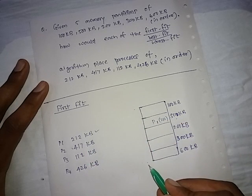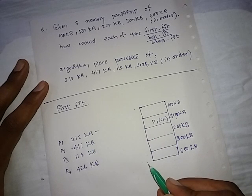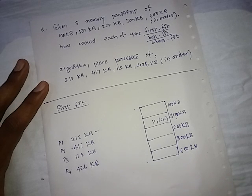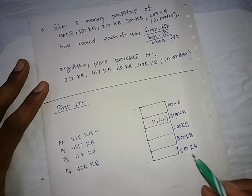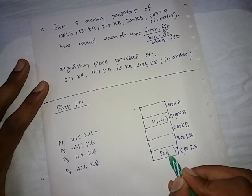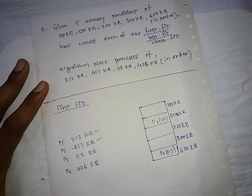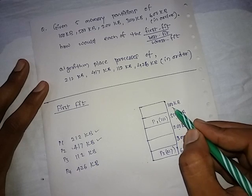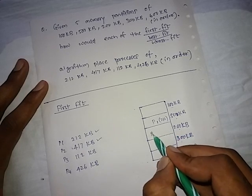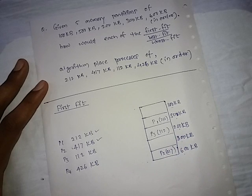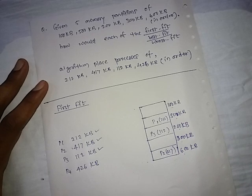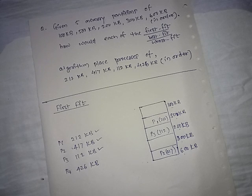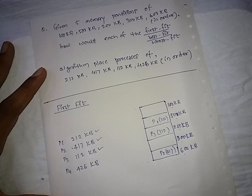For P3 (112 KB), starting again from the top: 100 KB cannot fit, but 200 KB can, so P3 is placed in the 200 KB partition. For P4 (426 KB), scanning all partitions, there is no remaining partition large enough to fit 426 KB, so P4 cannot be allocated to any partition.